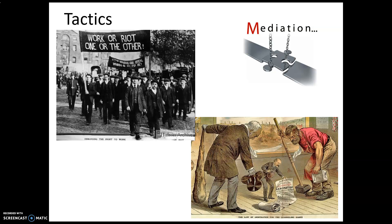Union tactics to gain better working conditions, higher pay, and a shorter work week began with collective bargaining — sitting down with management to negotiate. Sometimes a third party was brought in to suggest solutions; that's mediation. When the government forced a third party to make a binding decision, that's called arbitration, which typically favored workers.